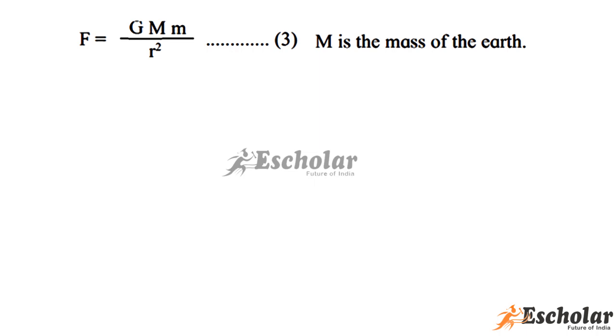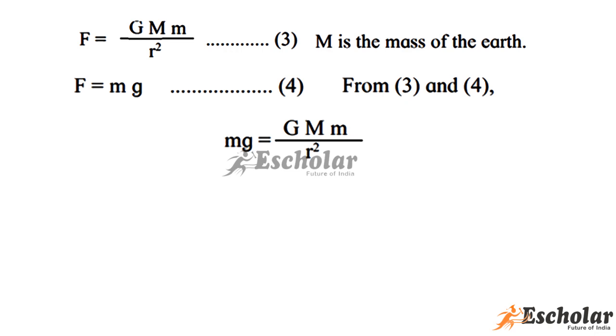Equation 3: Force equals mass of an object times g. Equation 4: From equation 3 and 4, we can say m times g equals G times mass of the earth times mass of an object upon r square. Therefore, g equals G times mass of the earth upon r square, which is Equation 5.